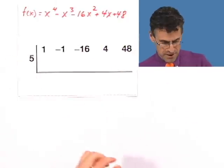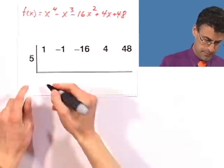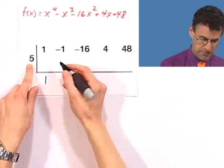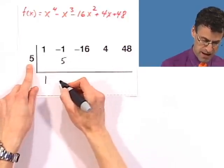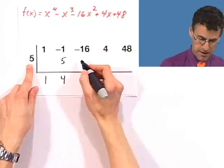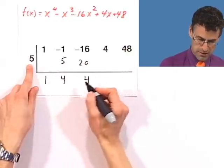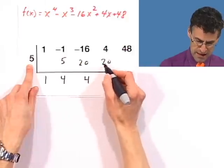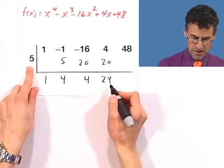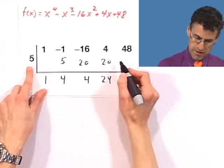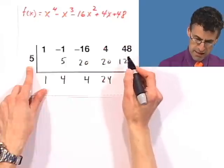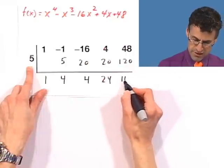Let's now synthetically divide by 5. So 1. 5 times 1 is 5. You add, you get 4. Here you get 20. Add, you get 4. Here you get 20 again. Add, you get 24. 5 times 24, that's 120. And you add, and you get 168.